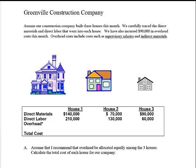Part A: assume that I, as CEO, tell my three project managers that I'm going to allocate overhead equally between the three houses. If I'm going to split the overhead equally, there's $90,000 of overhead and there are three houses, so $90,000 divided by three is $30,000 per house.